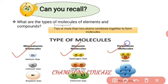So what is a monoatomic molecule? A monoatomic molecule means a molecule which is formed from a single atom.